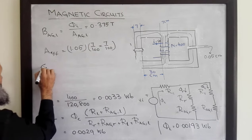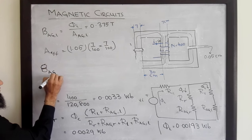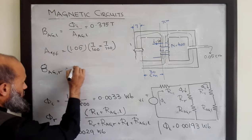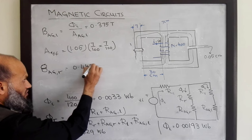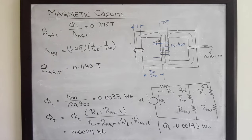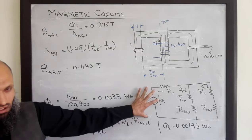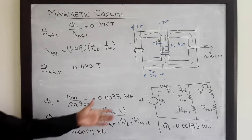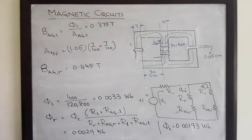Similarly, flux density in the right air gap can be computed, which comes out to be 0.045 Tesla. To summarize: magnetic circuits are quite similar to electrical circuits. The approach is to first draw the equivalent electrical circuit, then apply the same techniques learned for electrical circuit analysis to analyze the magnetic circuit.